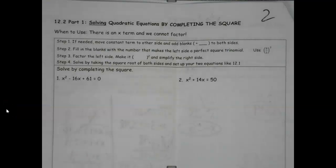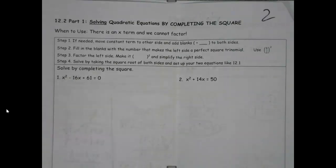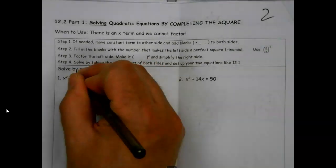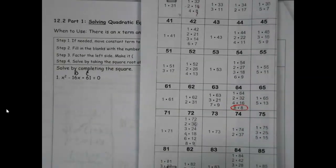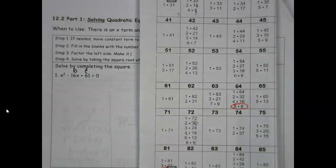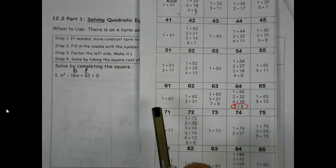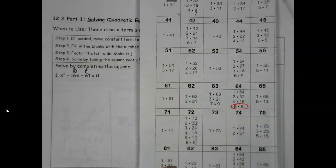Today we're going to chat about what happens when I try to factor something and I can't find numbers that work. For instance, normally we'd look at this first problem and say okay, I've got my c and b values, make two sets of parentheses, and go looking. But wait - something's not right, because normally if I take my c value, find a pair of numbers that add or subtract to get the middle, I can't make 1 and 61 turn into 16.